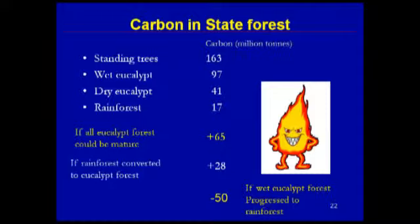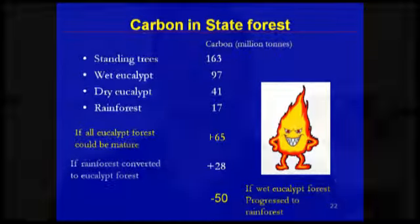In standing trees — both live and dead — there's about 163 million tons of carbon in state forest, dominated by wet eucalypt forest due to both its greater abundance and the much larger dimensions of its trees. Dry eucalypt forest stores 41 million tons and rainforest about 17 million tons. If we could simultaneously make all eucalypt forests mature, we could add 65 million tons of carbon, but this is absolutely impossible because we can't stop the wildfire that prevents this from occurring.